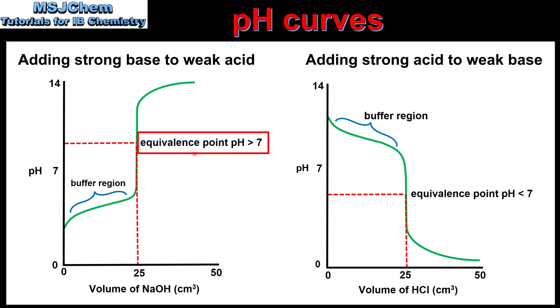The equivalence point occurs at a pH greater than 7. This is where stoichiometrically equivalent amounts of acid and base have reacted and the solution contains only salt and water. Because the salt produced from a strong base and a weak acid is a basic salt, the equivalence point occurs at a pH greater than 7.